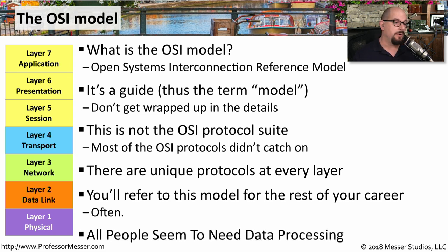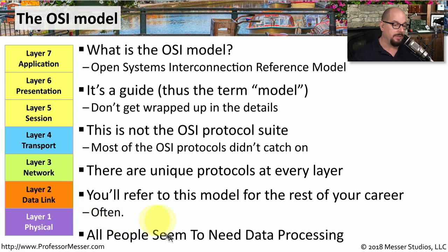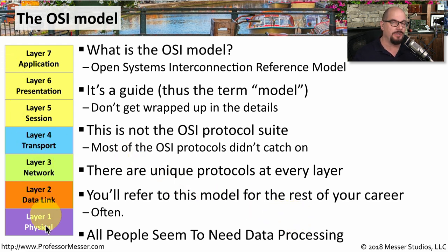The different layers of the OSI model are the application layer, presentation, session, transport, network, data link, and physical. And if you wanted to roll that into a single sentence, you would remember 'All People Seem To Need Data Processing,' which refers to application, presentation, session, transport, network, data link, and physical in that order.